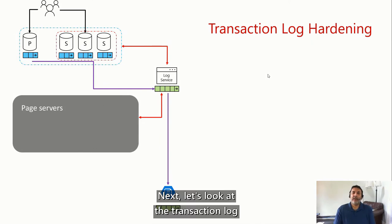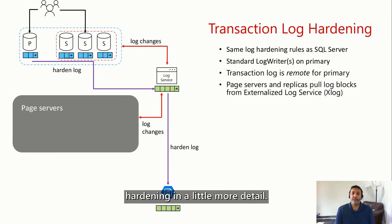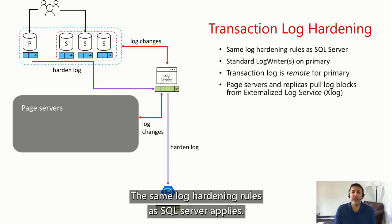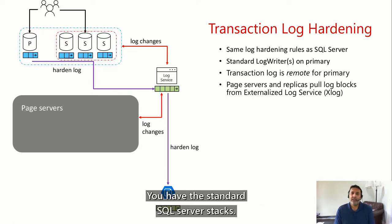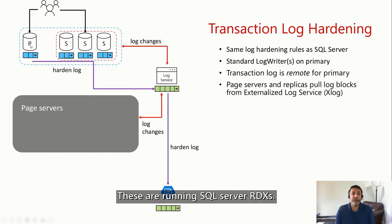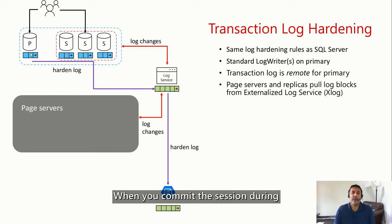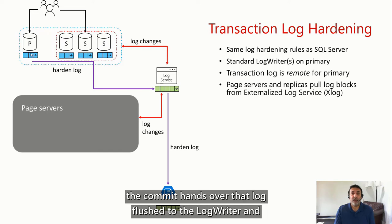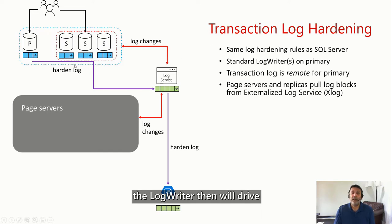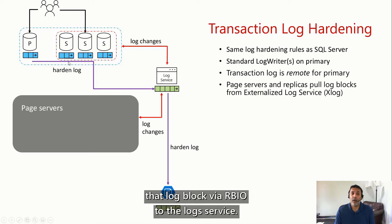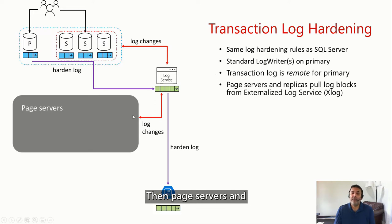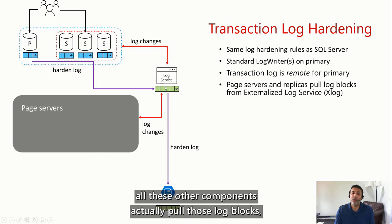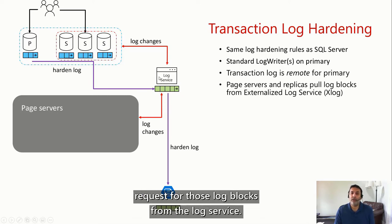Let's look at transaction log hardening in a little more detail. The same log hardening rules as SQL Server apply — these are running SQL Server.exe. So you have the log writer. When you do a commit, the session doing the commit hands over that log flush to the log writer, which then writes that log block via RBIO to the log service. Page servers and all other components then pull those log blocks or request for those log blocks from the log service.